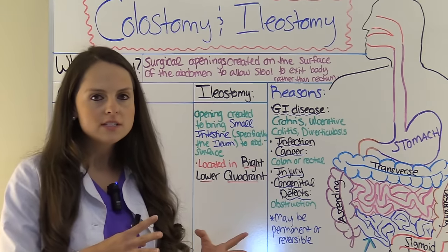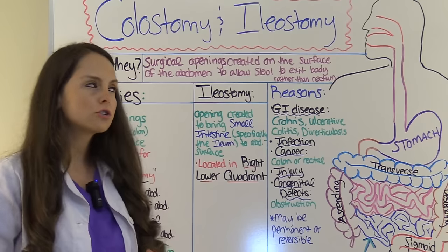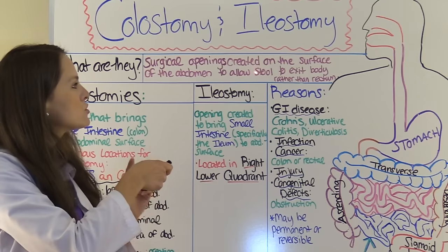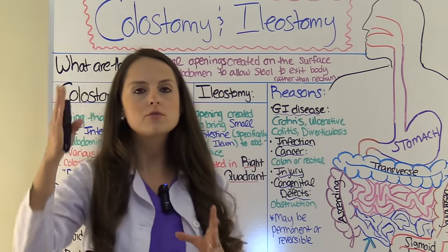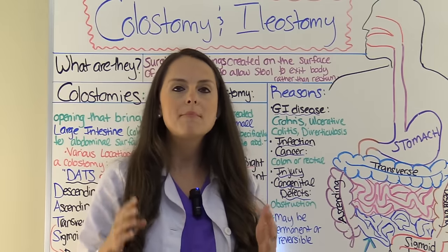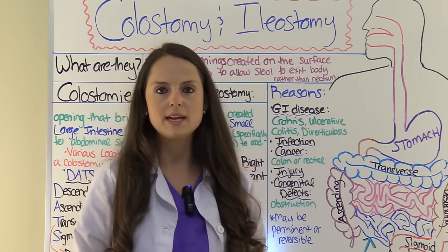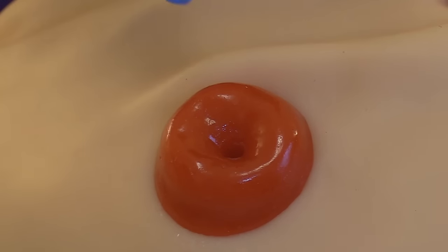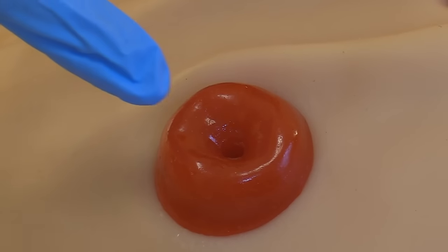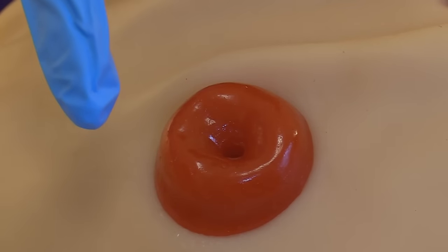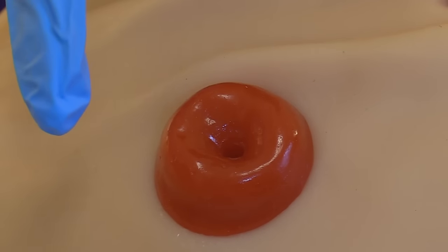So what is a colostomy or an ileostomy? It is a surgical opening created on the surface of the abdomen to allow stool to exit the body rather than through the rectum. Here is what a basic GI ostomy looks like on the surface of the abdomen. Notice you have the stoma sitting right on the surface of the abdomen, and in the middle is where the stool will be excreted. You always want your stoma to look nice and red, with a shiny and moist appearance.